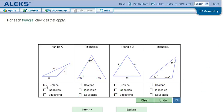So the first one is scalene, and then this one is equilateral, equilateral again, and isosceles.